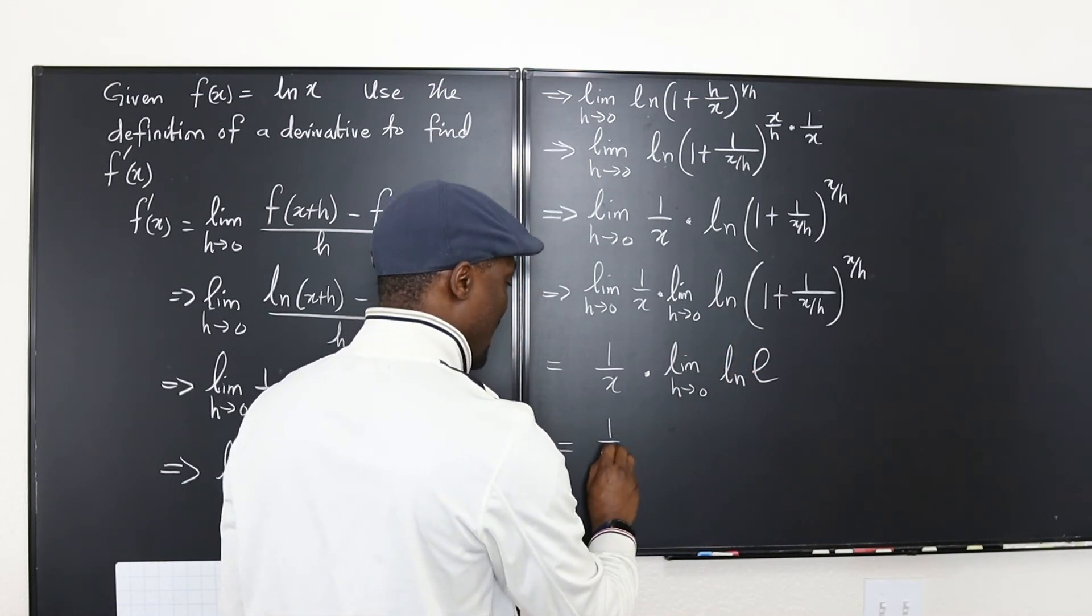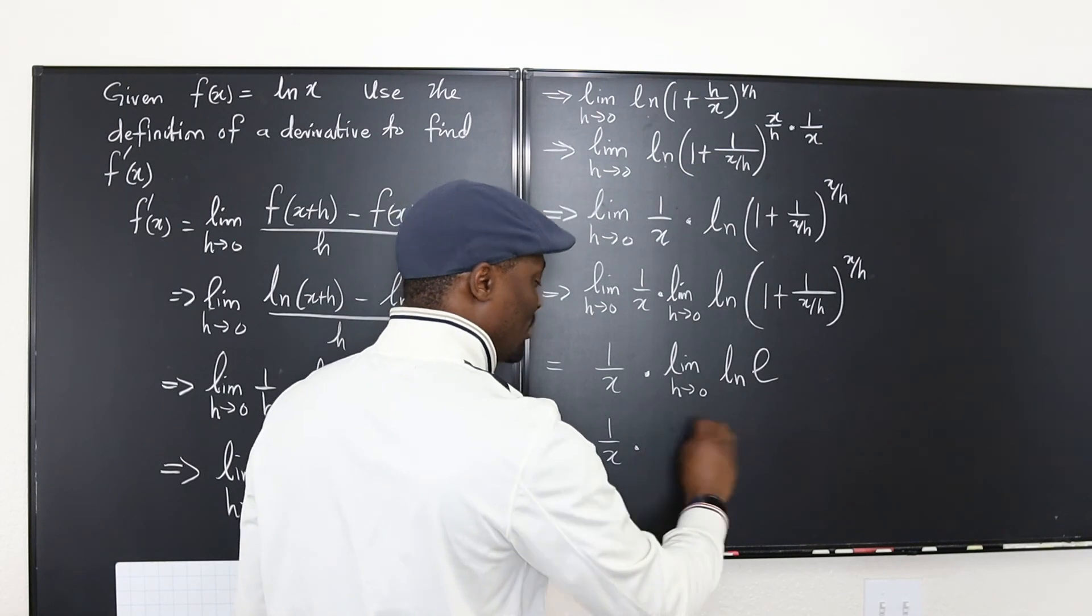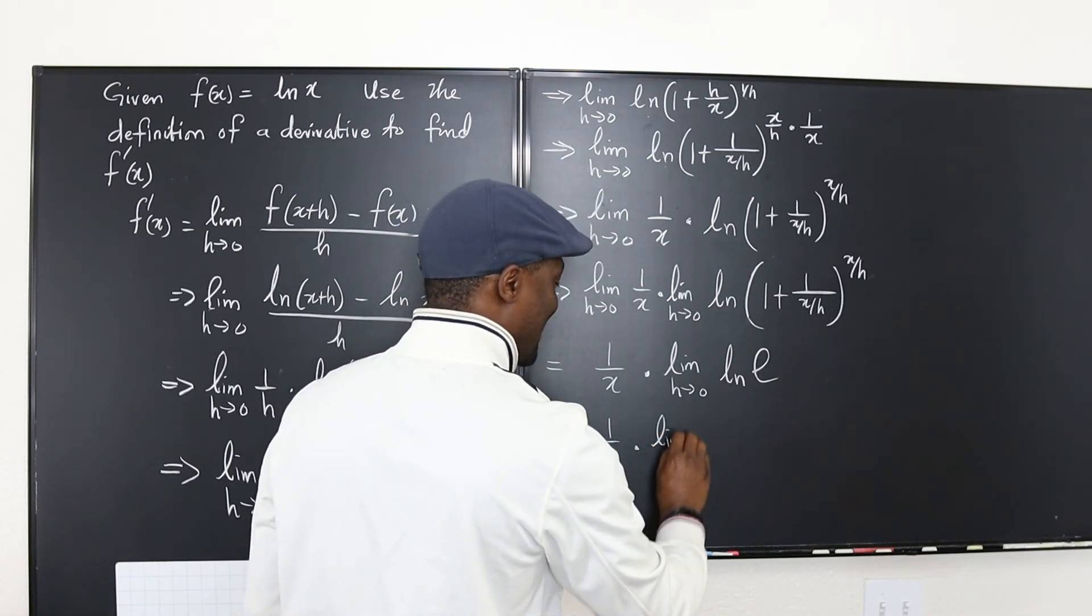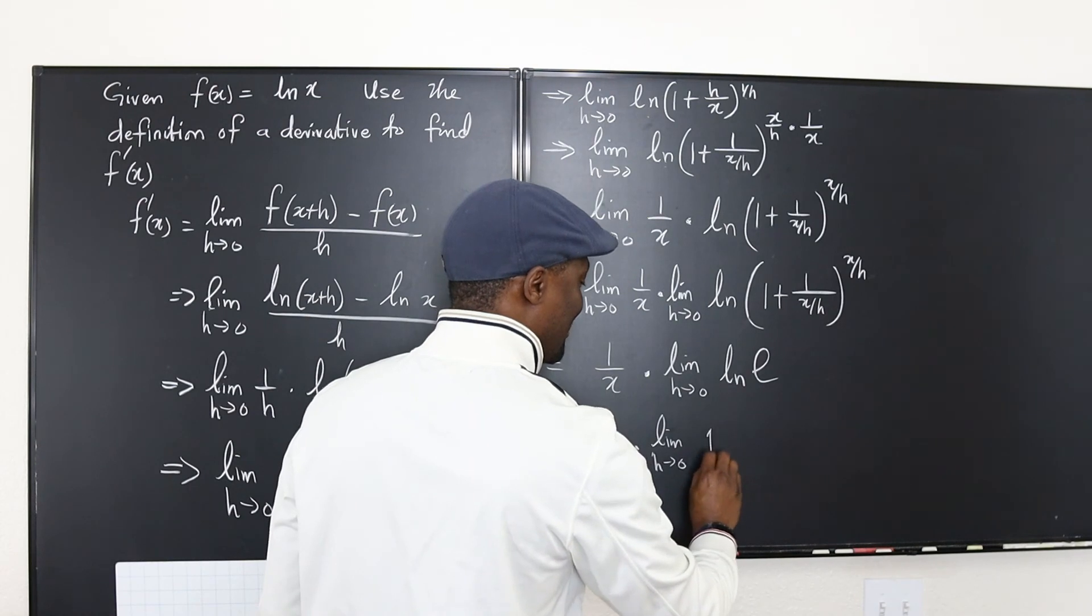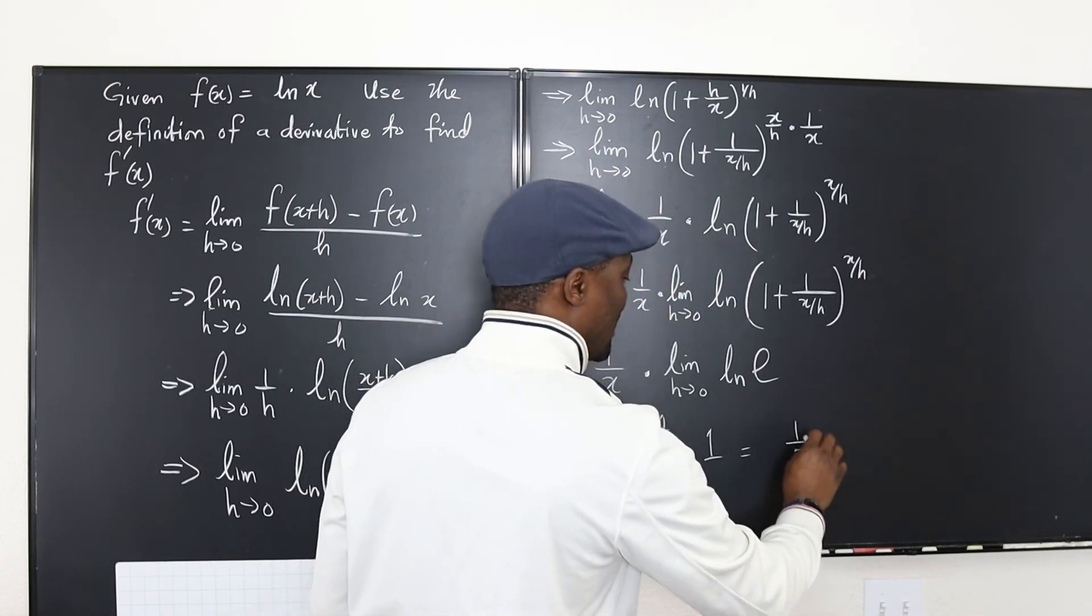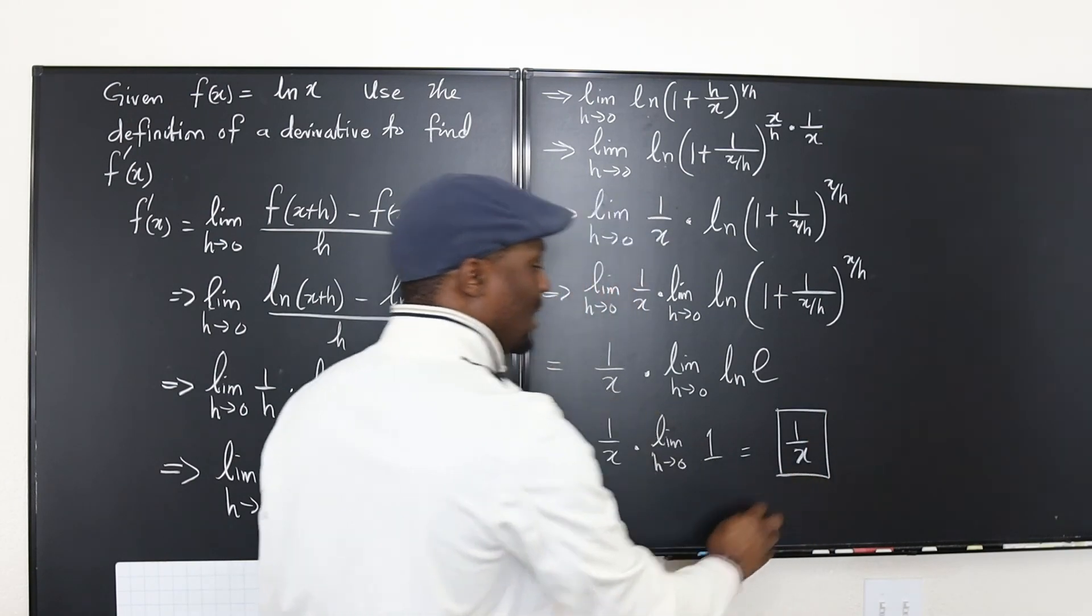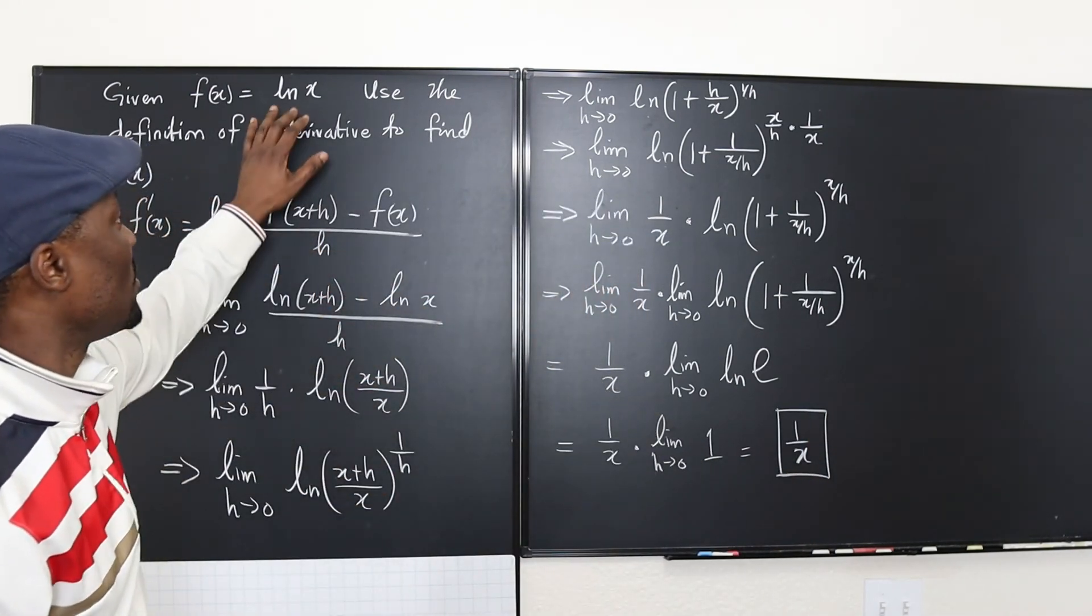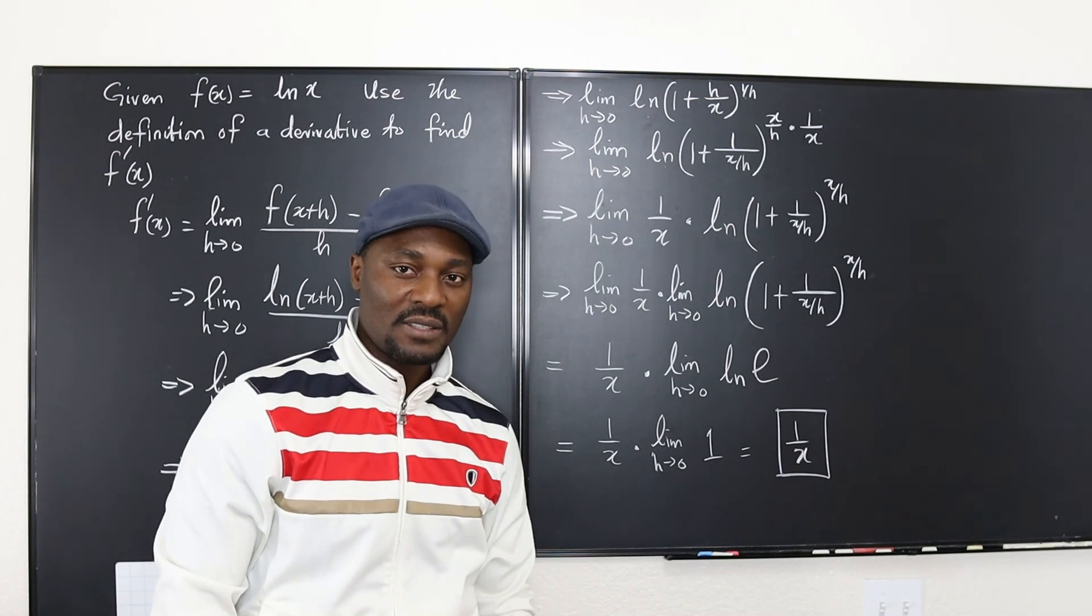So your answer is going to be 1 over x times, let me just write everything. Limit as h goes to 0 of 1 which is going to be 1 over x times 1. And that's it. So the derivative of the natural log of x is 1 over x.